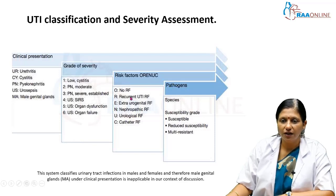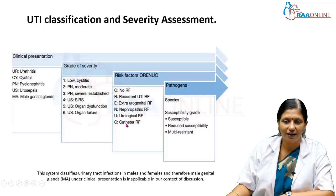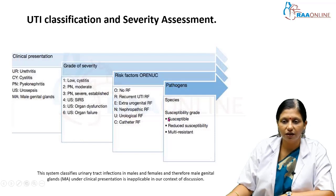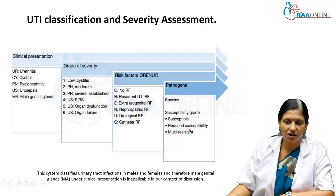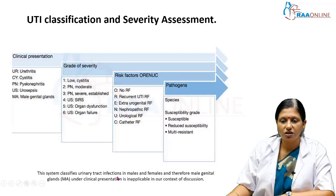Other risk factors can also be identified: no recurrent UTI with no renal failure; recurrent UTI with renal failure; extra-urogenital renal failure; nephropathic renal failure; urological renal failure; and catheter-associated renal failure. Regarding pathogens, various species are involved with varying degrees of susceptibility — pathogens can be susceptible, have reduced susceptibility to antibiotics, or be multi-resistant. This system classifies UTI in males and females, so male genital organ involvement under clinical presentation is not applicable in pregnancy.